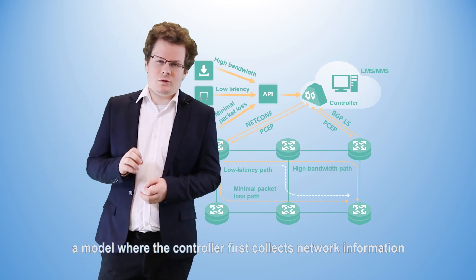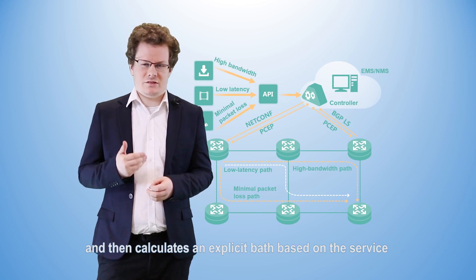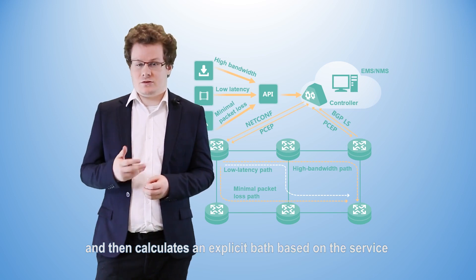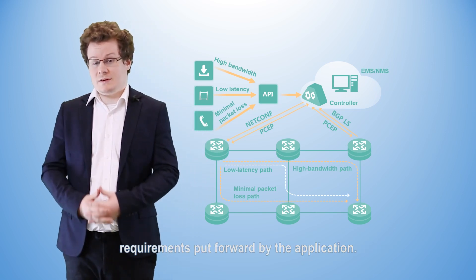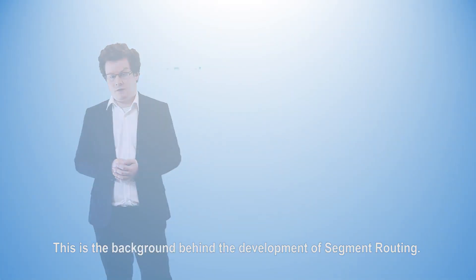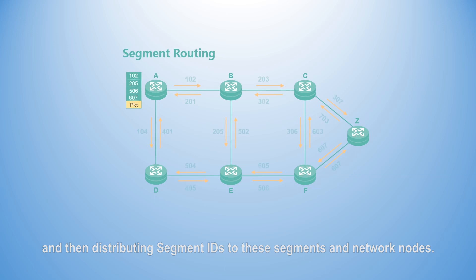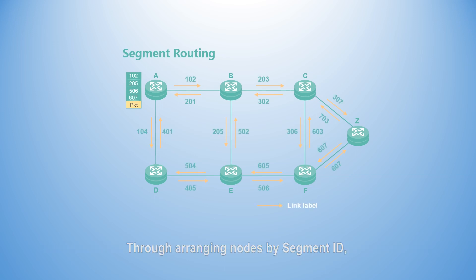Specifically, a model where the controller first collects network information, and then calculates an explicit path based on the service requirements put forward by the application. This is the background behind the development of segment routing. Segment routing works by dividing the network into several small pieces, and then distributing segment IDs to these segments and network nodes. Through arranging nodes by segment ID, we can obtain a complete forwarding path.